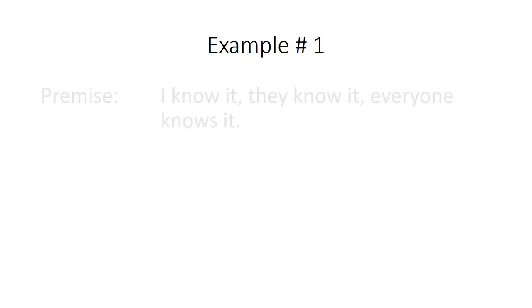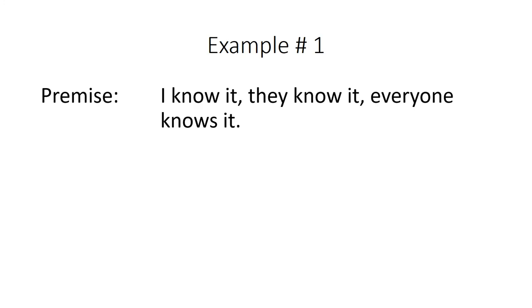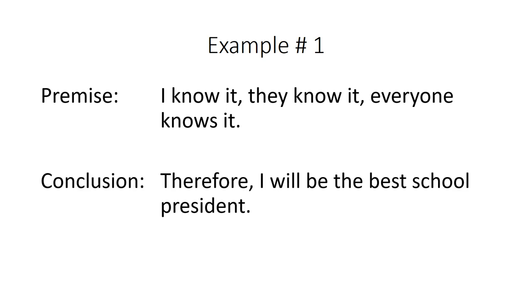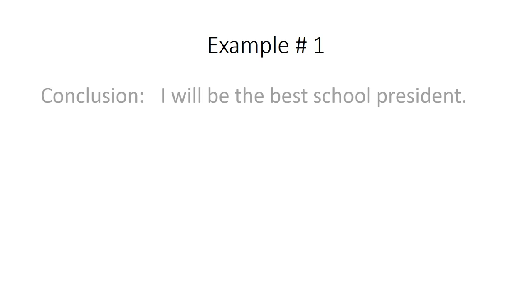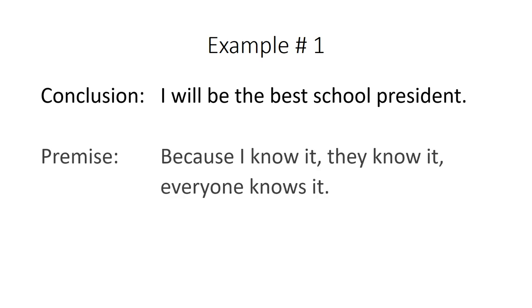Here's an example. I know it, they know it, everyone knows it. Therefore, I will be the best school president. This is an example of that type of fallacious argument, the bandwagon fallacy. Because how will we know he's going to be the best school president just because everyone else thinks so? It can also be set up where the conclusion comes first and the premise comes second, like this: I will be the best school president because I know it, they know it, everyone knows it.